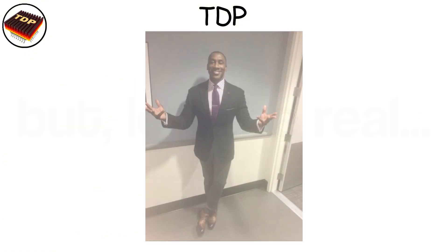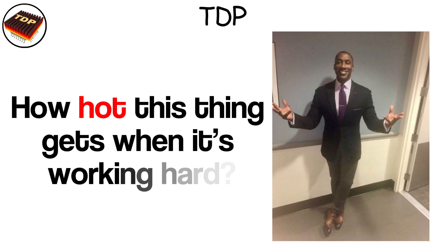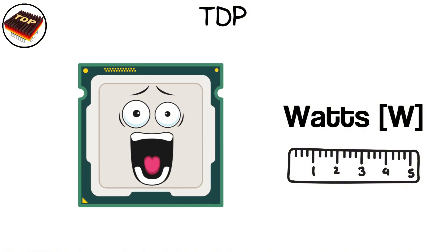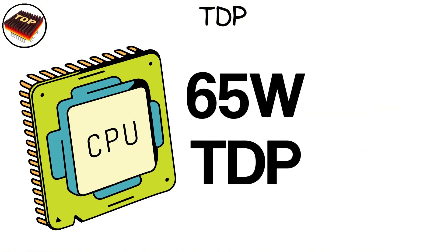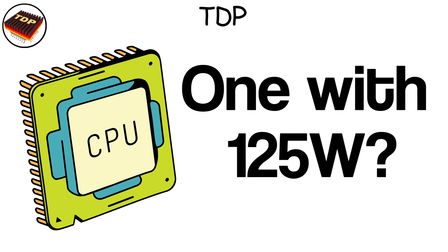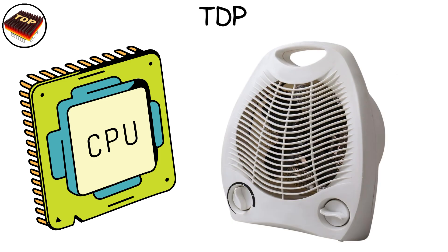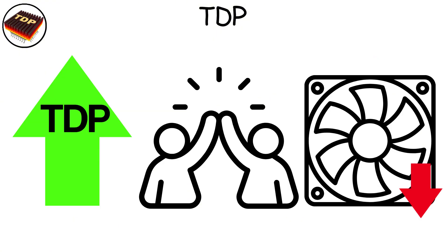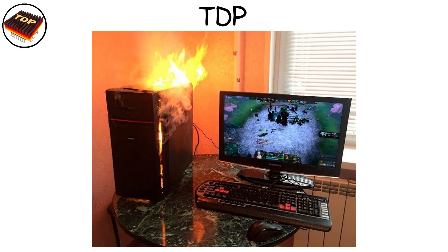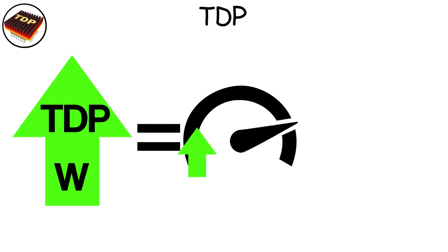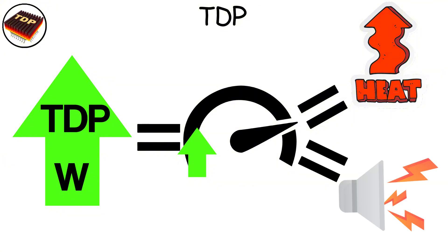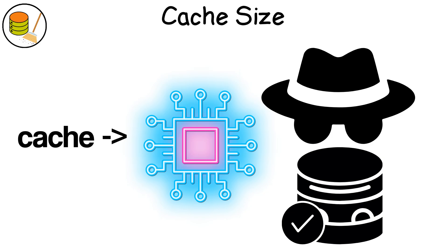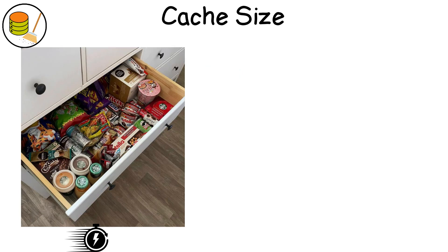TDP stands for thermal design power — it's a fancy way of saying how hot a CPU gets when it's working hard. It's measured in watts, like a light bulb, but instead of shining it's screaming internally. A CPU with 65 watts TDP runs cooler and uses less power; one with 125 watts is basically a space heater that can play games. TDP helps you choose the right cooler and power supply, because pairing a high-TDP CPU with a weak cooler is basically hosting a barbecue inside your case.